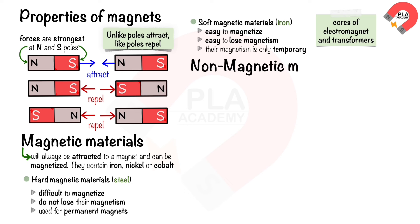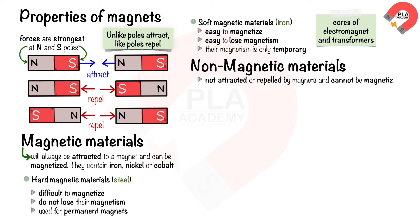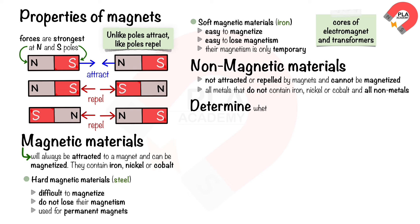Non-magnetic materials are not attracted or repelled by magnets and cannot be magnetized. They include all metals that do not contain iron, nickel, or cobalt, and all non-metals.